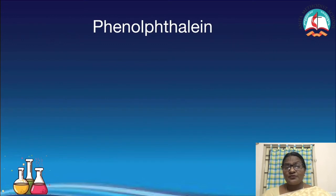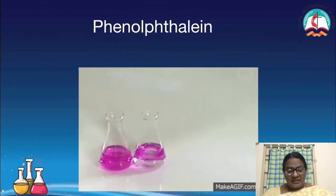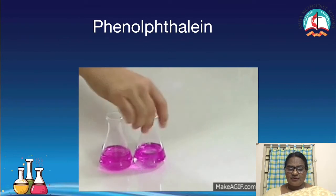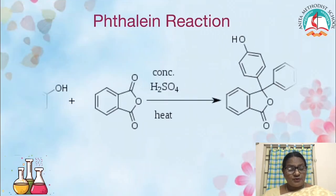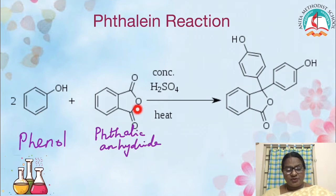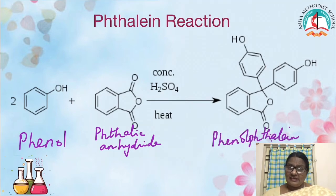The next reaction involves phenolphthalein. We use phenolphthalein as an acid-base indicator in the lab. This phenolphthalein is an organic compound also prepared by the action of phenol. It is colorless in the acid medium but gives a pink color in the basic medium. The reaction is called the phthalein fusion reaction: phenol reacts with phthalic anhydride (which has two -COOH groups that condense to remove water forming the anhydride). Two molecules of phenol condense with phthalic anhydride in the presence of sulfuric acid to form phenolphthalein.